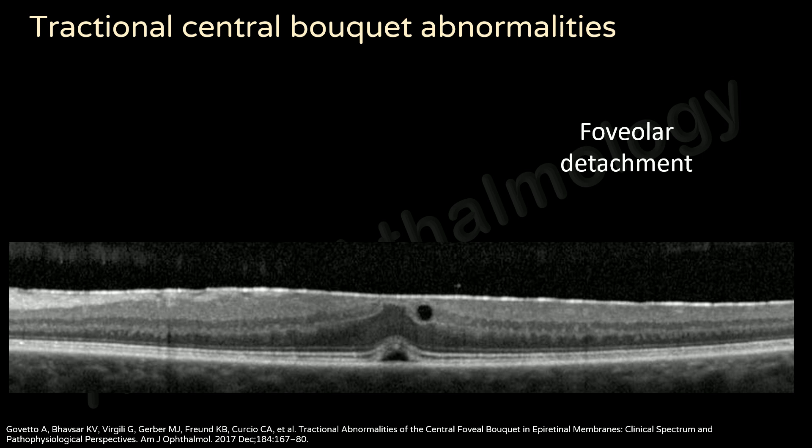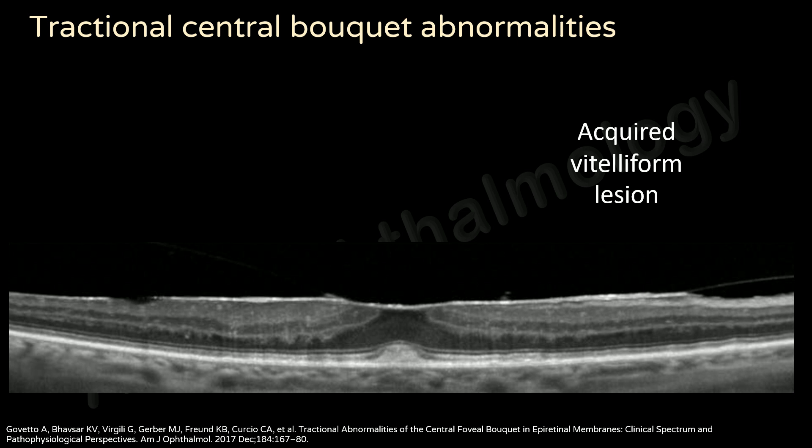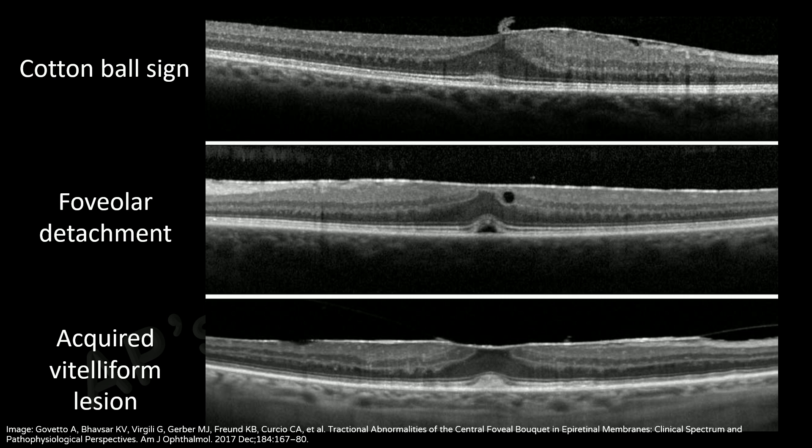Foveal detachment is the presence of a central pocket of sub-neurosensory hyporeflectivity or sub-retinal fluid. Acquired vitiliform lesion appears as a dome-shaped sub-retinal hyperreflective material located external to the ellipsoid zone and internal to the retinal pigment epithelium. The tractional central fovea abnormalities observed in idiopathic epiretinal membranes have been considered as subsequent stages of the same disorder, beginning with a cotton ball sign, followed by sub-foveal detachment, and later the acquired vitiliform lesion.